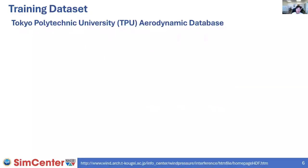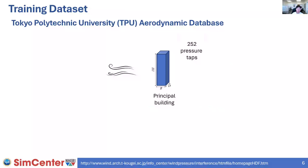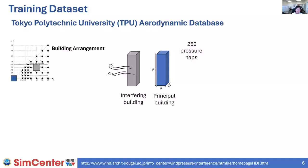The training data we used was from the Tokyo Polytechnic University Aerodynamic Database, a public database available to everyone. In this database, the experimental setting has a building model with sensors called pressure taps across the building surface that measure the pressure time history. Another building is located nearby the target building to create an interference effect, and experiments were repeated for different building arrangements. The black dots represent possible locations of interfering buildings investigated, and the blue one is the target building of interest.